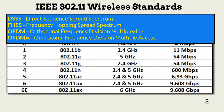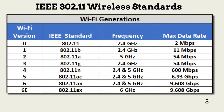These transmission standards are DSSS, or Direct Sequence Spread Spectrum; FHSS, Frequency Hopping Spread Spectrum; OFDM, Orthogonal Frequency Division Multiplexing; and OFDMA, Orthogonal Frequency Division Multiple Access. OFDM is used for Wi-Fi versions 3 through 5, and version 6 uses OFDMA, an extension of OFDM.